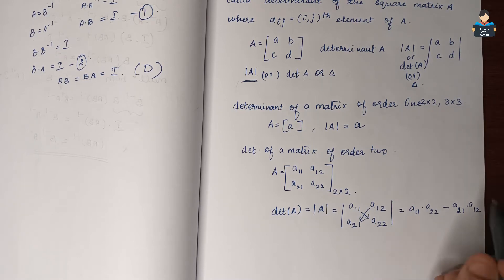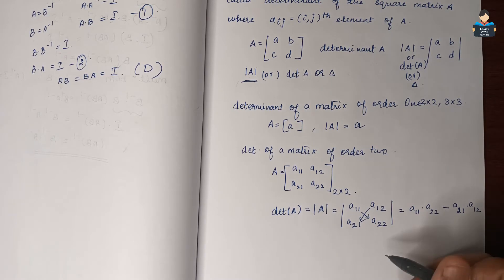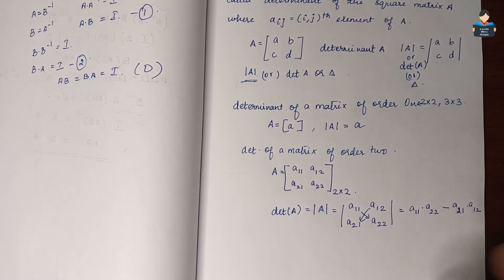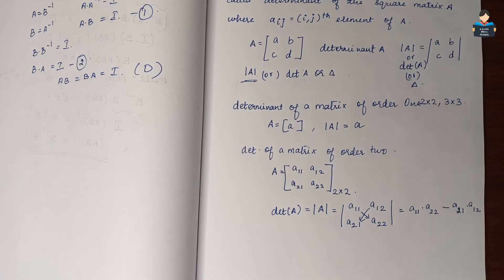The number associated to the matrix can be a real number. Positive values are there, negative values are there. Next, the determinant of a matrix of order 3.